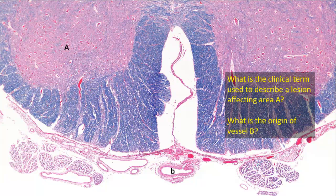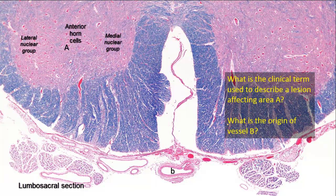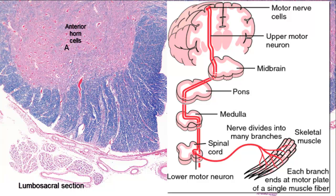What is the clinical term used to describe a lesion affecting area A? What is the origin of vessel B? A is the anterior horn containing anterior horn cells, also called alpha motor neurons or ventral horn motor neurons. In the lumbosacral region shown in this section, the large alpha motor neurons are aggregated into medial and lateral nuclear groups. The large number of ventral horn motor neurons in the cervical and lumbosacral enlargements reflects the extensive motor innervation required to supply the limbs. Fibers of the corticospinal tract — upper motor neurons — synapse with these alpha motor neurons of the anterior horn cells, which is why these cells are called lower motor neurons.